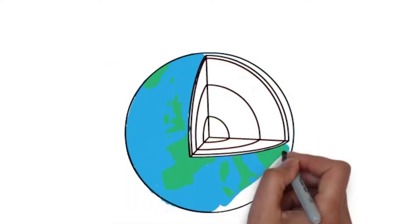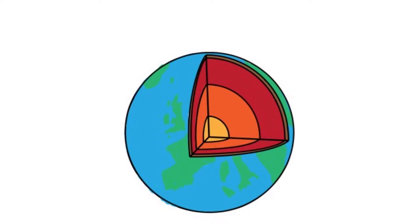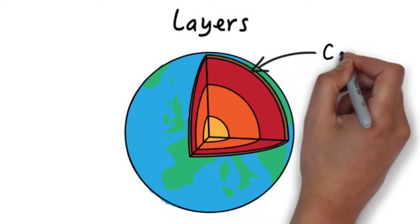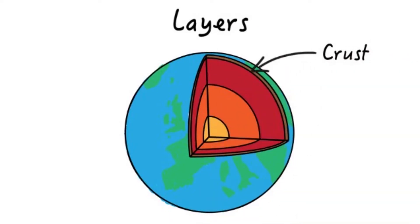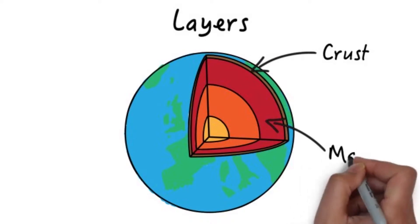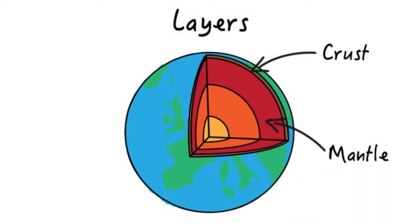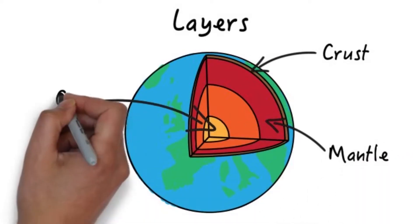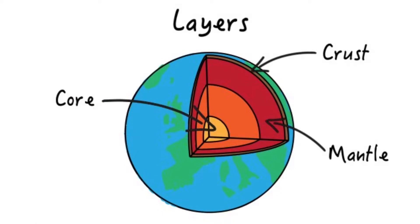Although no one has ever dug that far below the Earth's surface, we divide Earth into three main layers: a thin layer of rock called crust, a very hot layer of solid and molten rock called the mantle, and the innermost layer called the core.